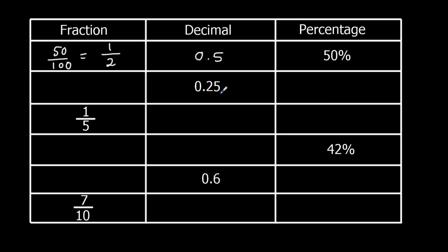0.25, change it to a percentage. So 0.25 times 100, that's 25%. And then we'll change the percentage to a fraction by writing it over 100, 25 over 100. They're both in the 25 times table, 1 and 4. 1 quarter.